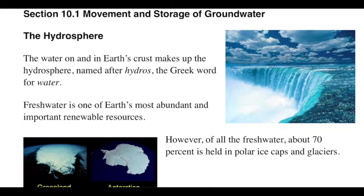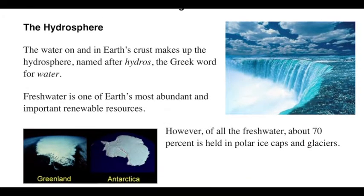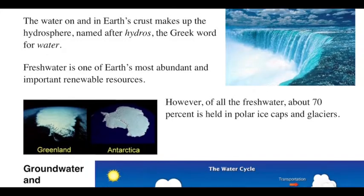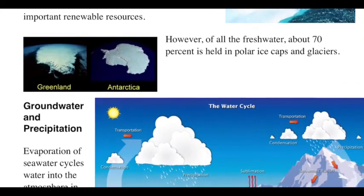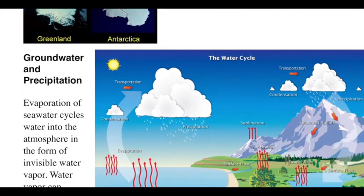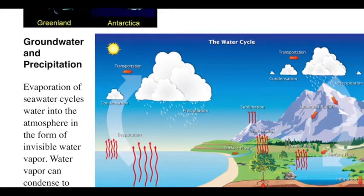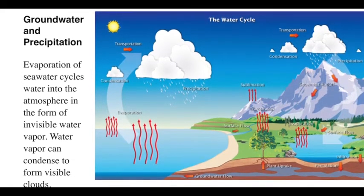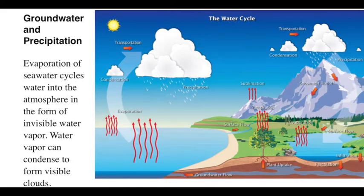Fresh water is held mostly in frozen form. Glaciers and ice packs in Antarctica and Greenland specifically account for most of the fresh water. There is fresh water in the ground — that's all fresh water, stored in wells and aquifers — and also in the air. As water evaporates, given enough energy, it evaporates into the air and can form clouds and then eventually precipitate.